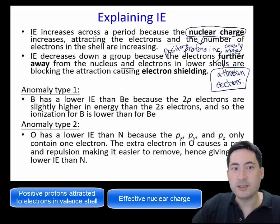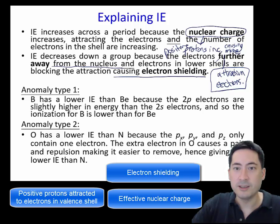Ionization energy decreases down a group because electrons are further away from the nucleus. The electrons in lower shells are blocking, causing electron shielding.